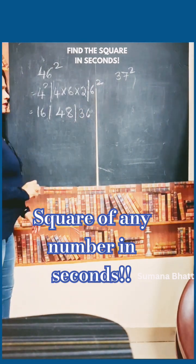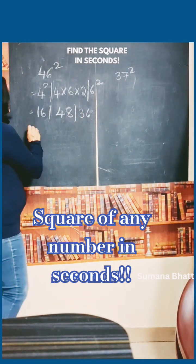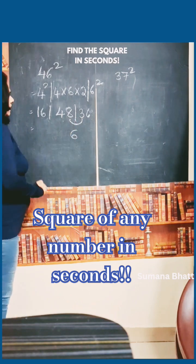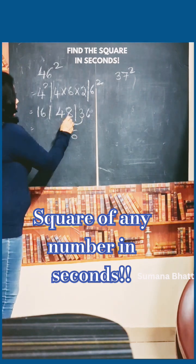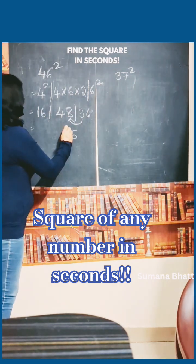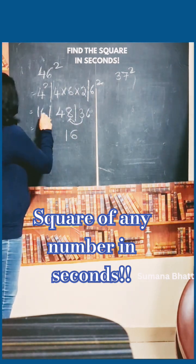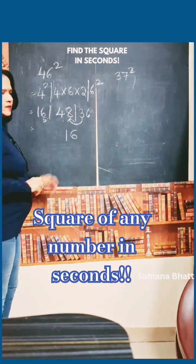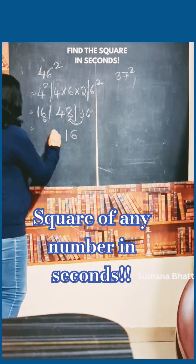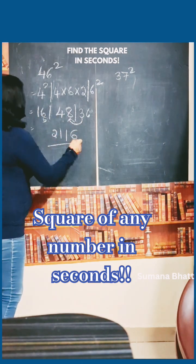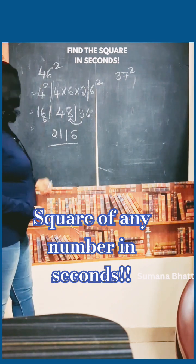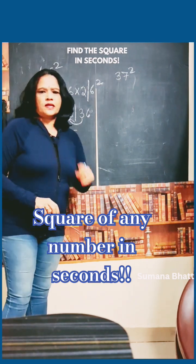Now in the next step, write the 6 as it is. Add this 3 to the previous: 48 plus 3 is 51, so write 1 and carry 5 to the next. 16 plus 5 is 21. So 46 square is 2116.